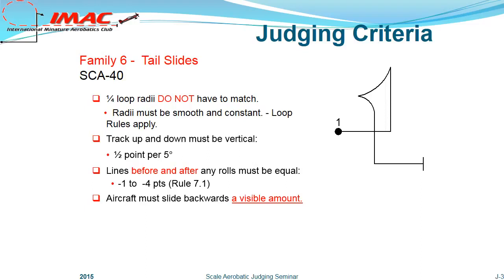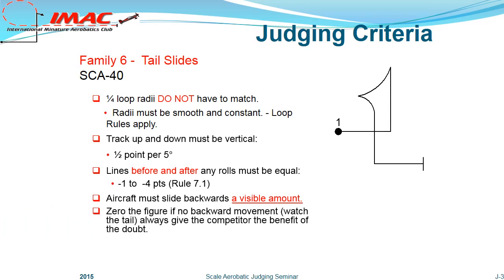In a tail slide, the aircraft must display a visible amount of backward movement. If no visible movement is seen, the figure must be scored a zero. As always, the competitor should receive the benefit of the doubt.